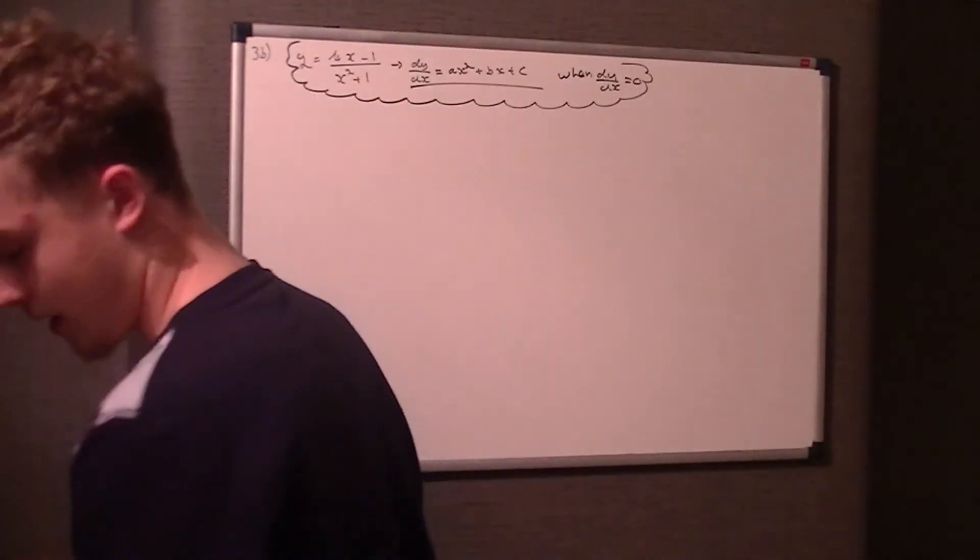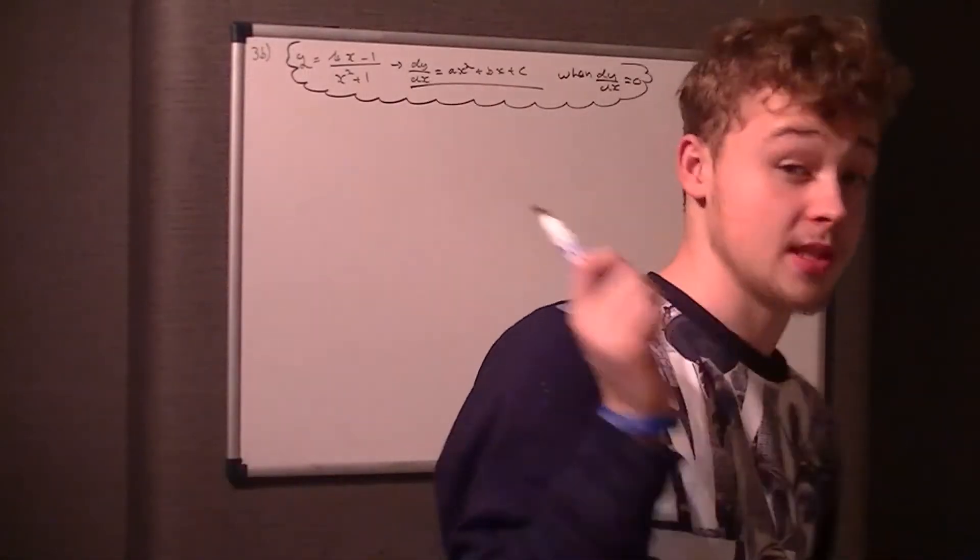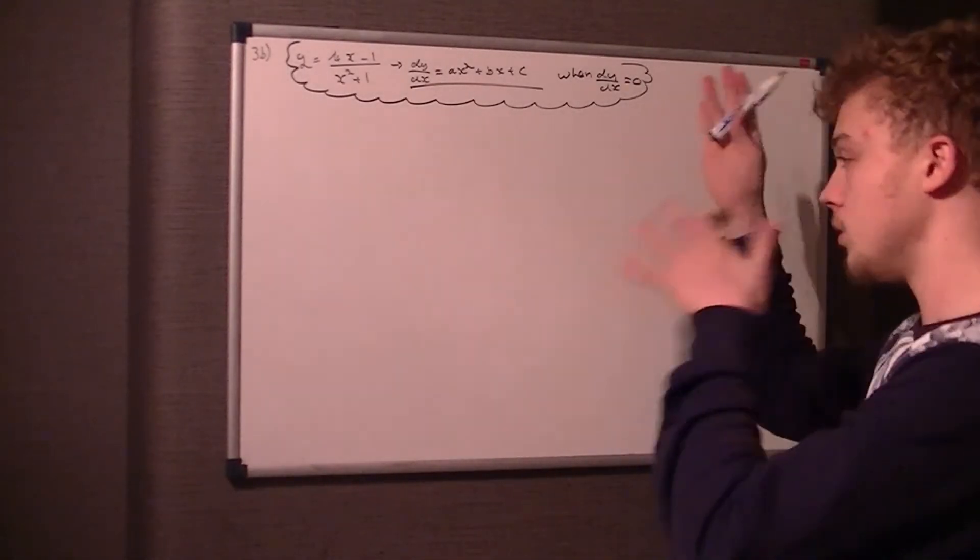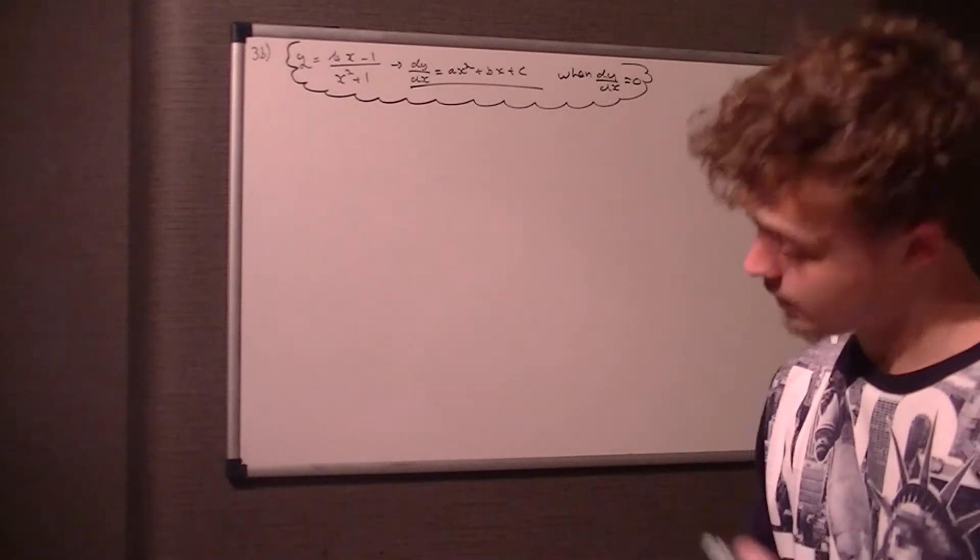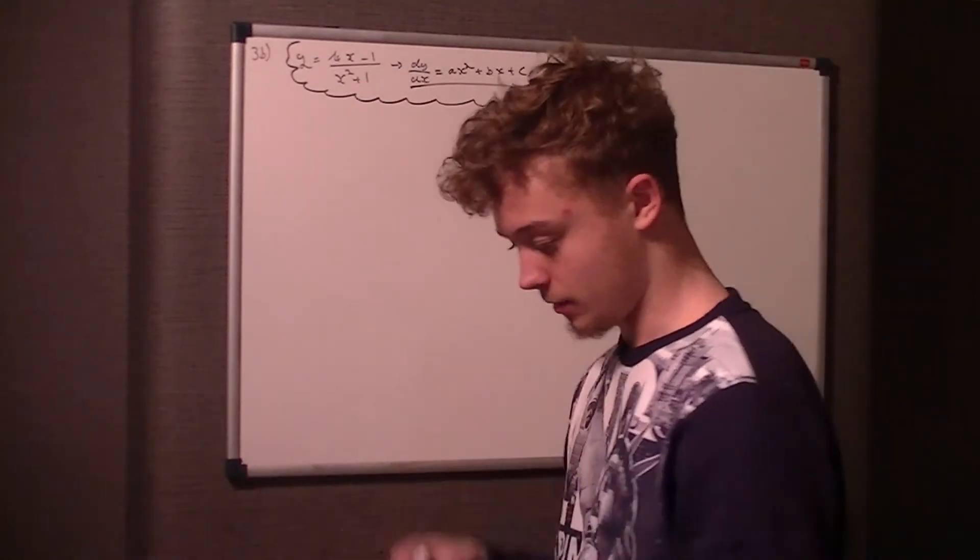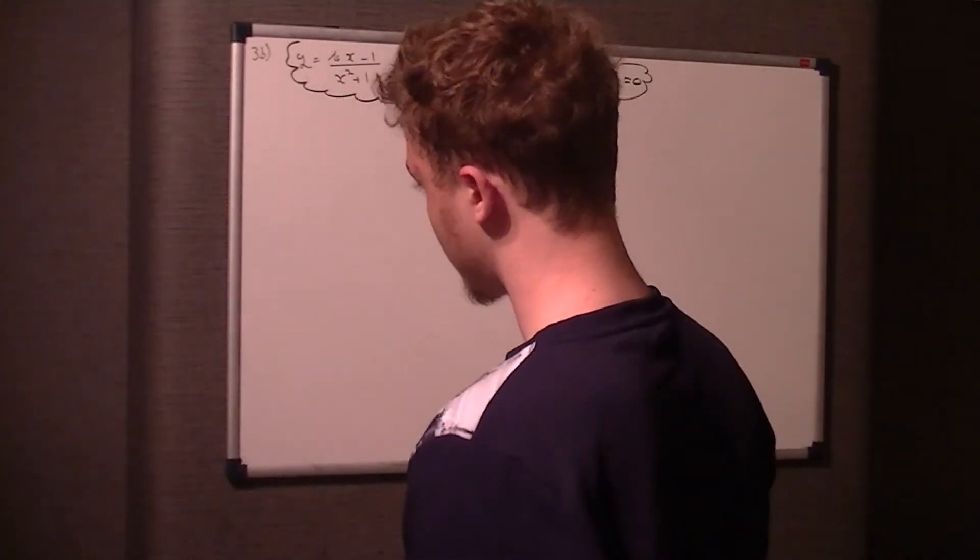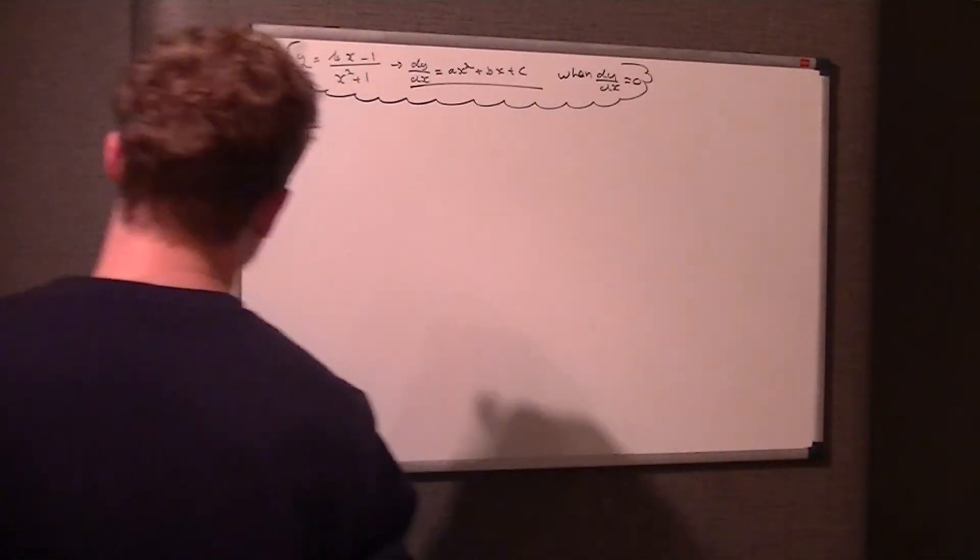Ignoring that second bit, we're told to find when dy/dx is 0. Doing this is the same method as if we didn't have those bits of information. We're differentiating a fraction, so we're going to need our quotient rule.